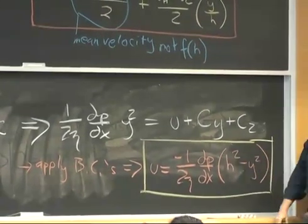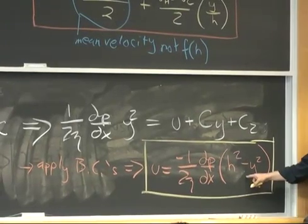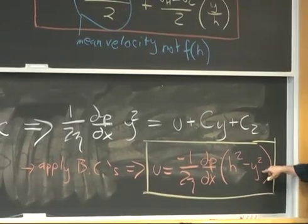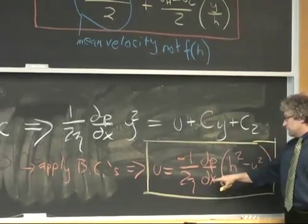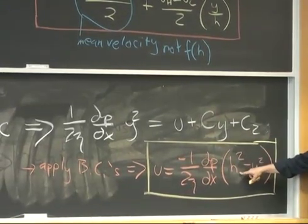You can see that the maximum velocity in this velocity distribution is where y equals 0, at which point we get minus 1 over 2 eta times dp dx times h squared.